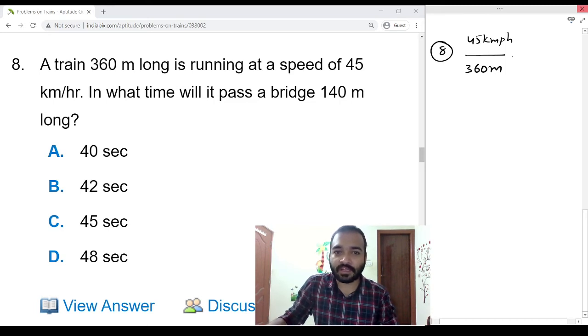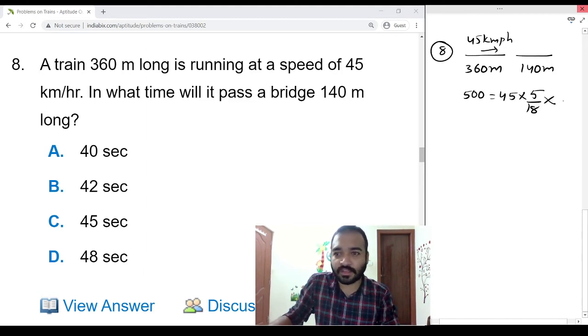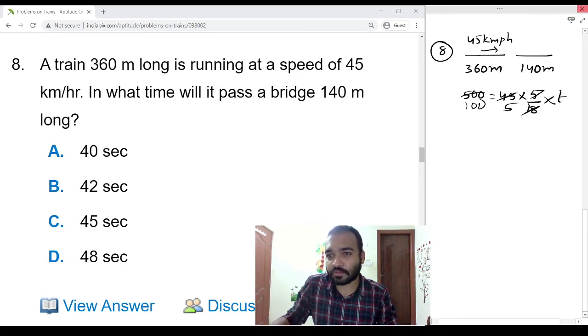In what time will it pass a bridge? Another bridge is there, 140 meters long. How much time will it take? Time equals distance, which is 360 meters plus 140 meters, that is equal to 500, equals 45 km/h converted into meters per second times time. This is 100. 5 times 9 table, 5 times 2 times 5 table, 20 times t equals 40 seconds.